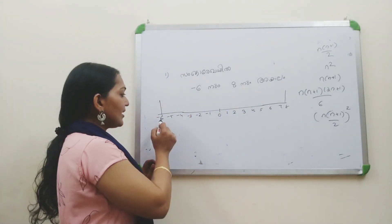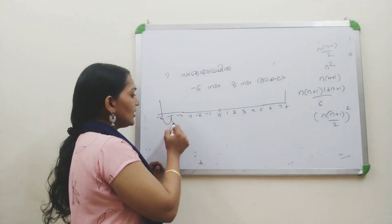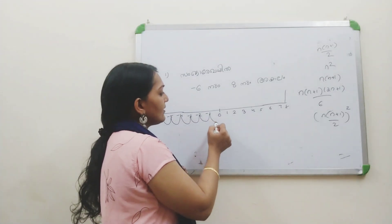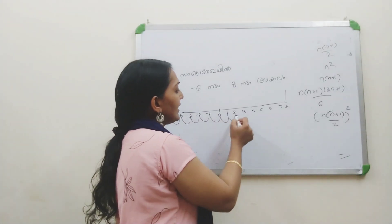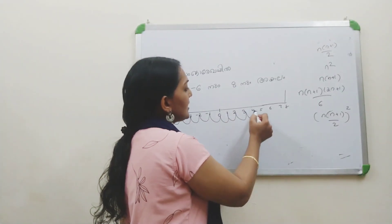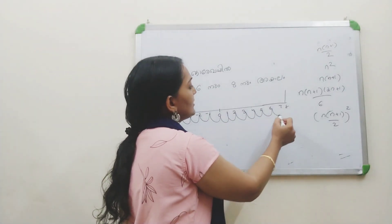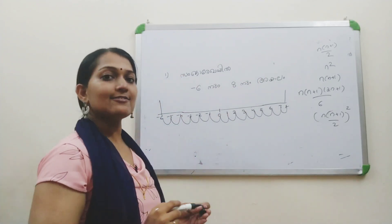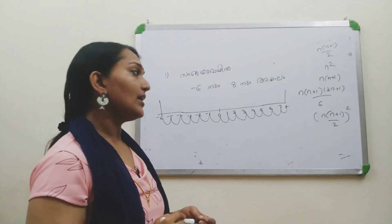We count the distance on the number line: 1, 2, 3, 4, 5, 6, 7, 8, 9, 10, 11, 12, 13, 14. So the answer is 14.